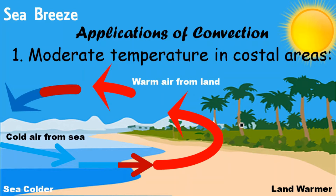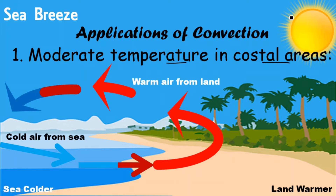The first application of convection is moderate temperature in coastal areas. Coastal areas are those where land is very near to the sea — for example, Goa or Mumbai. These areas have moderate temperature, meaning it is neither too hot nor too cold. This moderate temperature is because of convection.